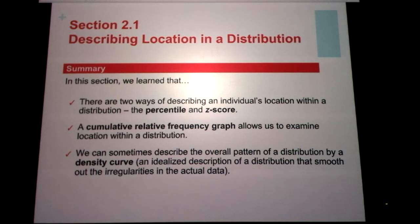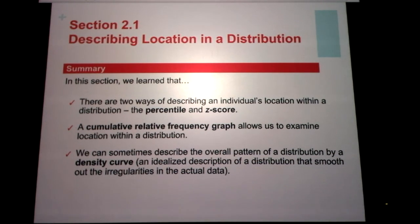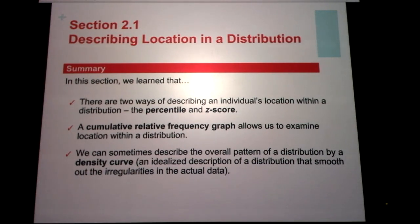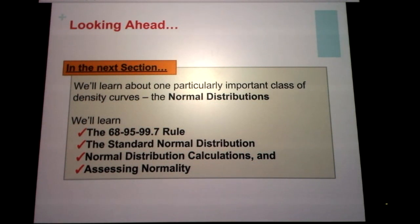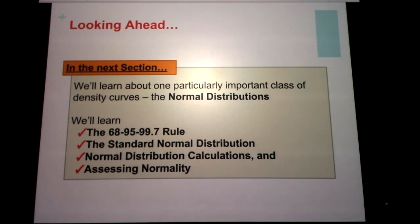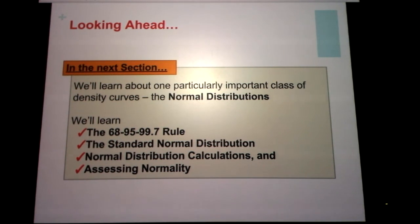In this section, there are two ways to describe an individual's location within a distribution: percentile and z-score. We looked at how to put percentiles into a graph — the cumulative relative frequency graph, also called an ogive. We also looked at density curves: they always have an area of 1 beneath them, they're always above the x-axis, and they're a model of a large amount of data. Next time we'll look more specifically at bell curves and finding percentiles within them. That's it for the lecture — if you have any questions, shoot me an email. Have a good day!